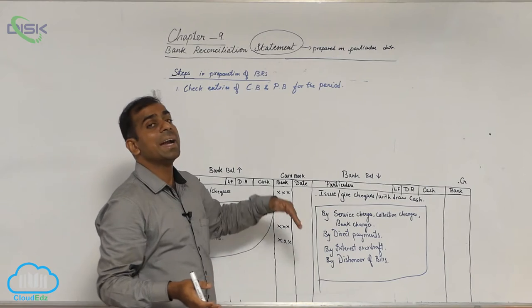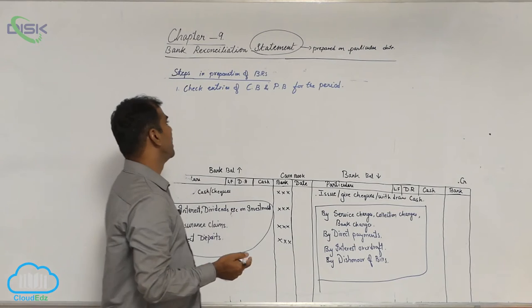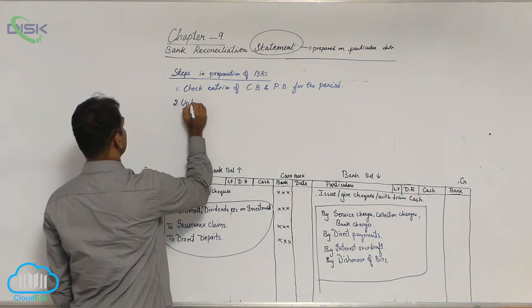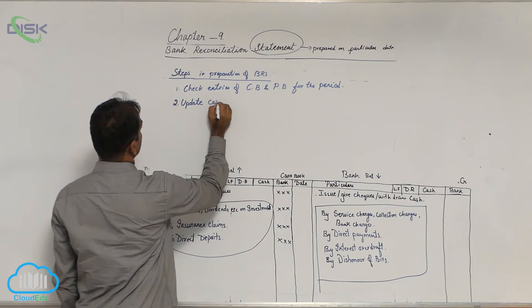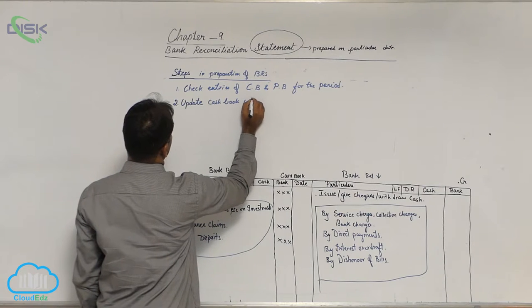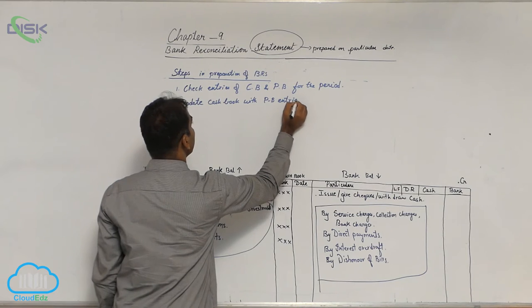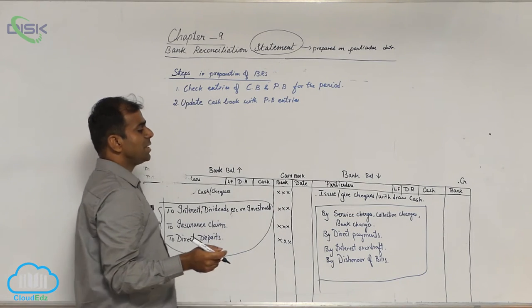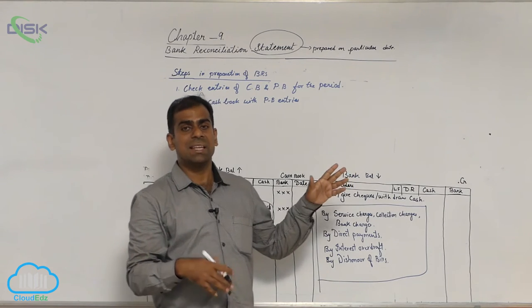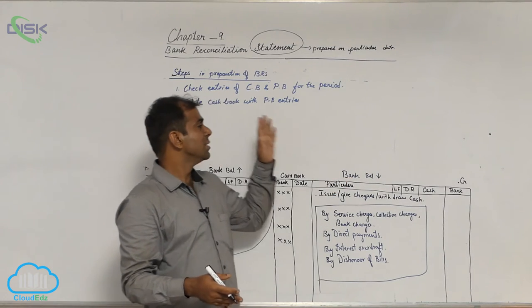So both you will see the entries that are there in the cashbook and compare them with the entries on the opposite side of the passbook. Next step, update cashbook with passbook entries. Meaning, when you compare, you might have seen some entries are made by the bank in the passbook and the same is not there in the cashbook and they are all correct.